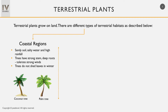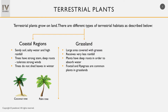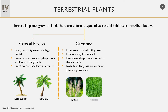The second terrestrial habitat is grassland. As the name suggests, grasslands are large areas covered with grasses. Grassland habitat receives very little rainfall. Plants in this habitat have deep roots in order to absorb water from the soil. The most common plants in grasslands are grasses, for example, foxtail and ryegrass.